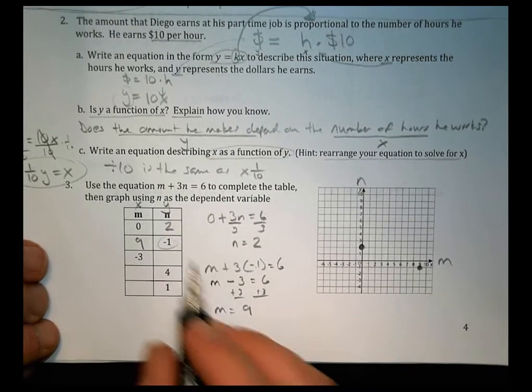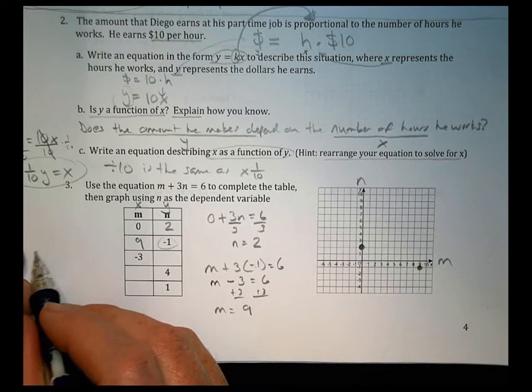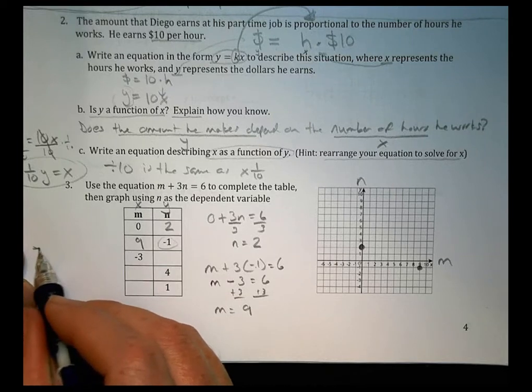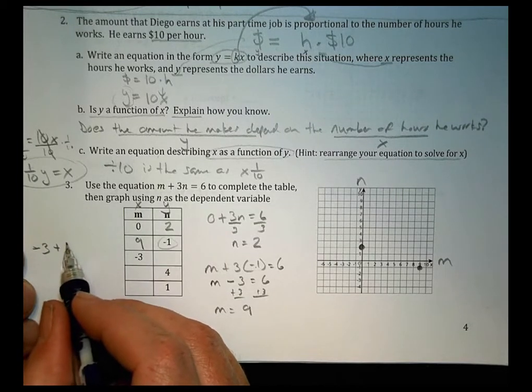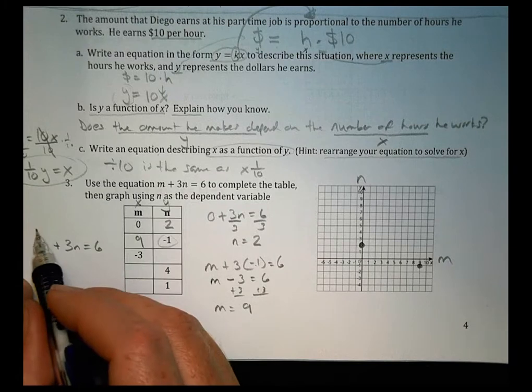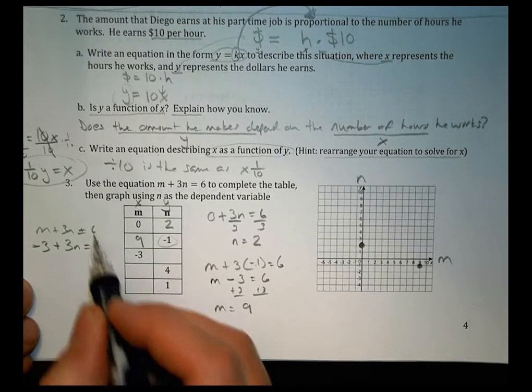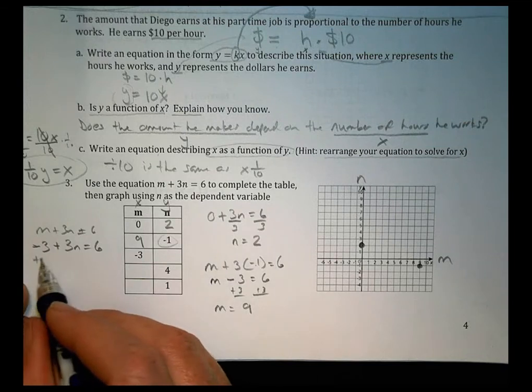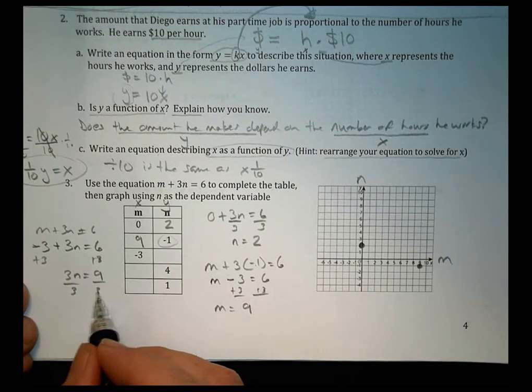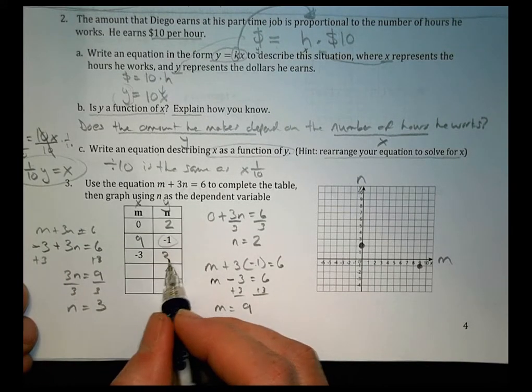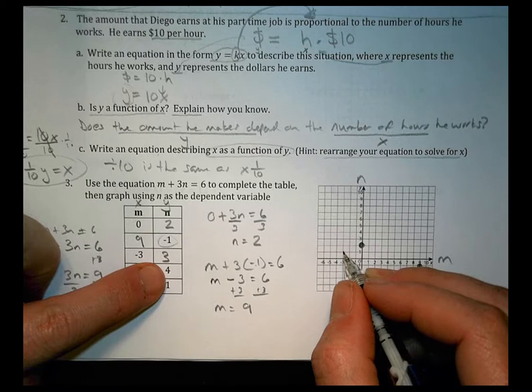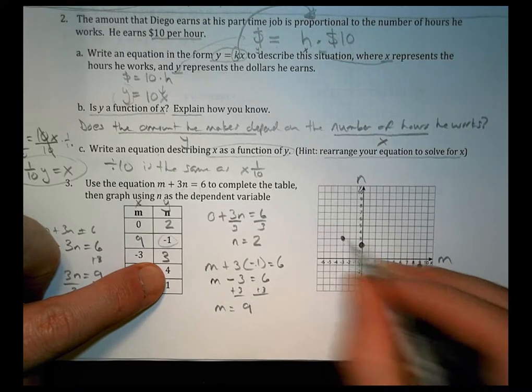Let's do one more together. We have M at negative 3. So we could say when M is negative 3, we would say negative 3 plus 3N equals 6. All right, using the same equation, that's our M plus 3N equals 6. Plugging negative 3 in for M. So we'll add 3 to both sides. So 3N equals 9. Divide both sides by 3, and N equals 3. So at negative 3, when M is negative 3, the value of N is going to be positive 3. 1, 2, 3. So you have a point right there.